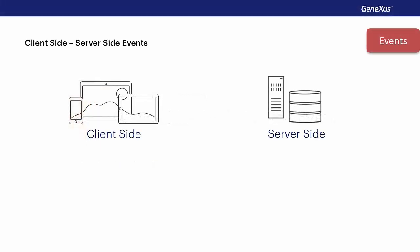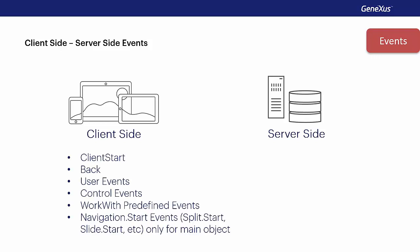In this video, we'll start studying the events that we may define at the smart device object level in the context of an online application, pointing out the aspects in which an offline app will differ from what's shown here. Applications for smart devices include two types of events: the client-side events and the server-side events.